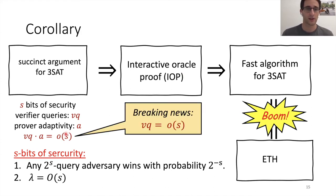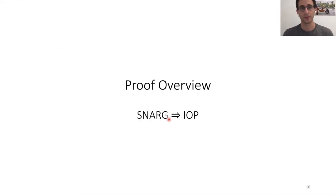Actually, very recently, we improved this to the mere condition that the query complexity of the verifier is sublinear in S. So this rules out SNARGs with a small number of queries.